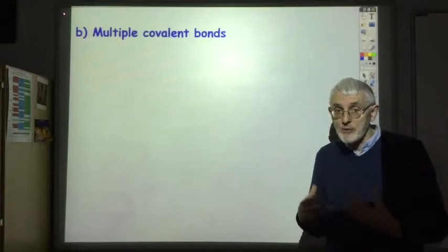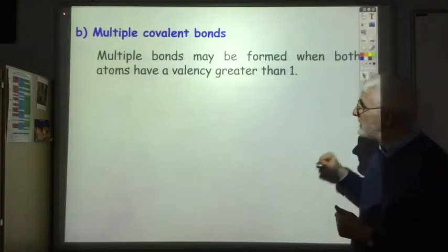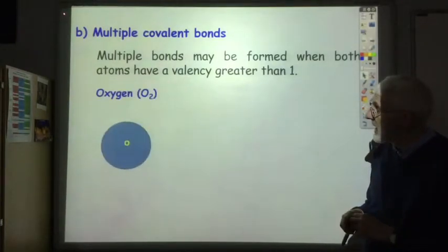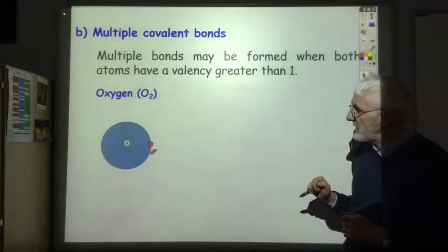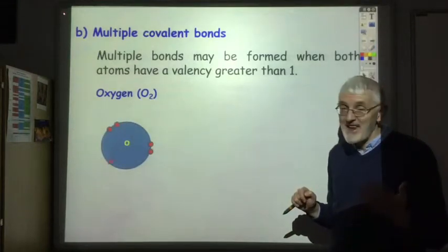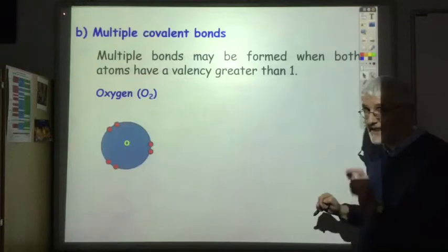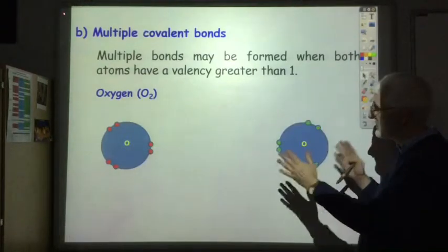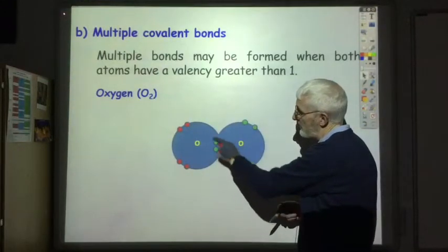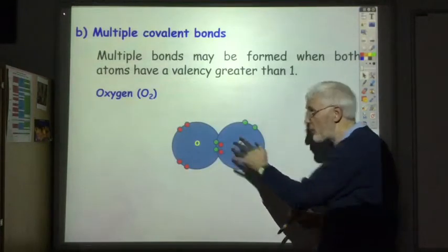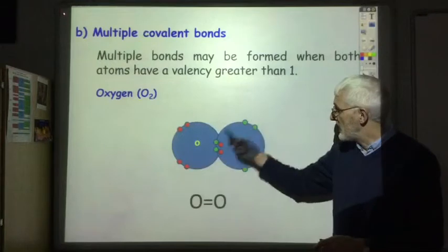Some molecules involve double or triple covalent bonds, which occur when atoms have a valency greater than one. For example, oxygen has electron arrangement 2,6 - show just the six outer electrons. It wants eight outer electrons so it must make two covalent bonds. With two oxygen atoms, if they share two electrons each, there are two pairs of electrons in the shared area - equivalent to two covalent bonds, shown as two lines - and each oxygen now has eight electrons.